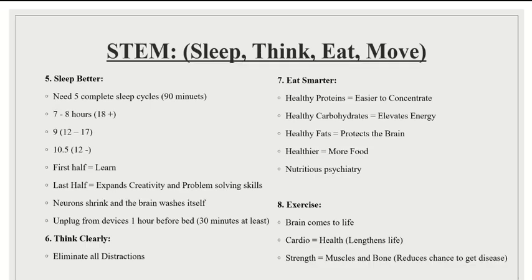The next four I call STEM: Sleep, Think, Eat, and Move. You must sleep better — you need five complete sleep cycles, which is 90 minutes each. You need seven to eight hours if you're 18 or over, nine hours if you're 12 to 17, and 10.5 hours if you're 12 and under. The first half of sleep is when you consolidate what you learned during the day, and the last half expands creativity and problem-solving. Your neurons actually shrink while you sleep so your brain can wash itself out.